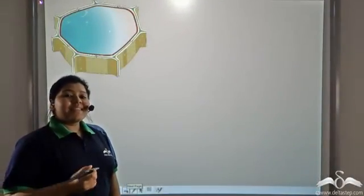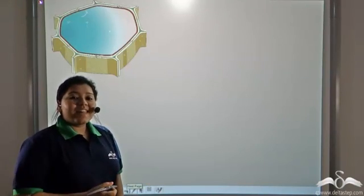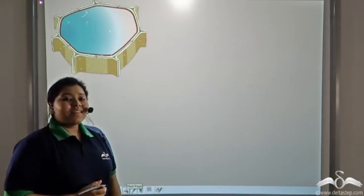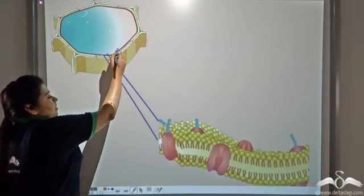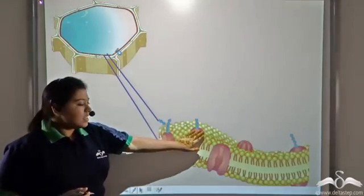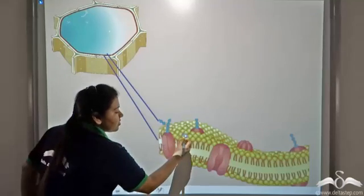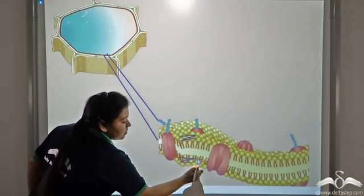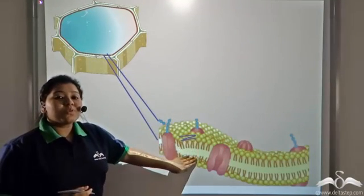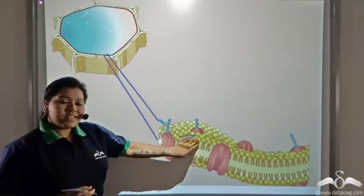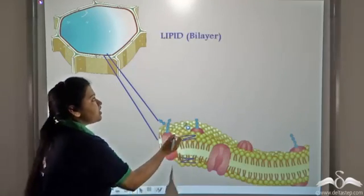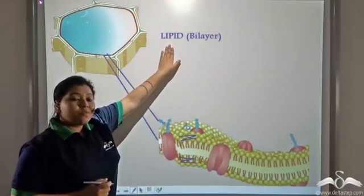Now, what is this selectively permeable cell membrane made of? Let us see. You can see these yellow globular structures that are present in two layers. So, what are these yellow globular structures? These structures are known as lipids. What are lipids? Lipids are a kind of fat.